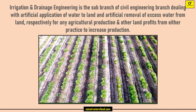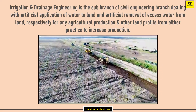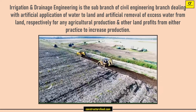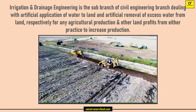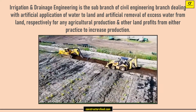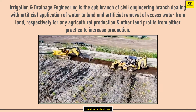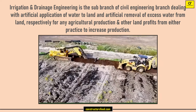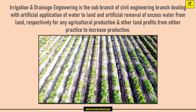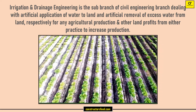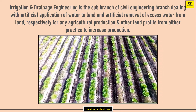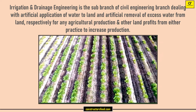Irrigation and drainage engineering is the sub-branch of civil engineering dealing with the artificial application of water to land and the artificial removal of excess water from land, respectively. Agricultural production and other land uses profit from either practice to increase production.